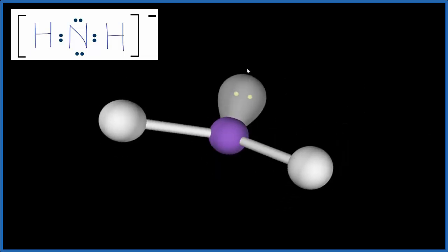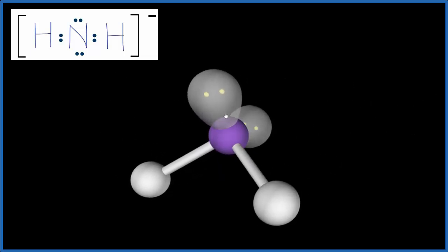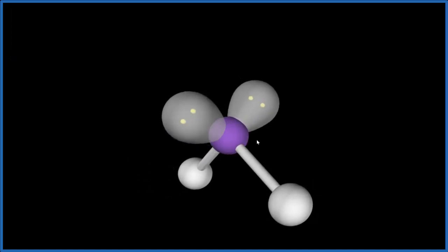and you can see that lone pair forces those hydrogens down. We add one more, and now we have this bent molecular geometry. These two lone pairs have forced the hydrogens down.